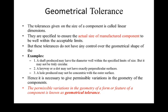For example, a shaft produced may have the diameter well within the specified limits of size, but it may not be truly a circular one — it may be elliptical also. Therefore, what elliptical dimensions are acceptable, what is the minimum diameter, what is the maximum diameter, has to be specified in the geometric tolerances. A keyway or slot may not have exactly perpendicular surfaces — it may be inclined surfaces. A hole produced may not have concentric diameters. Therefore, the permissible variation in the geometry of the form or feature of the component is called a geometric tolerance.